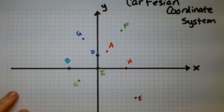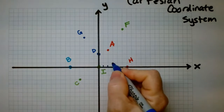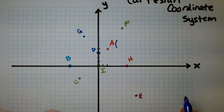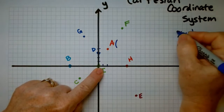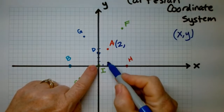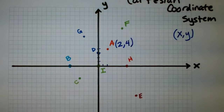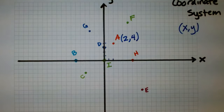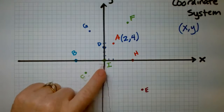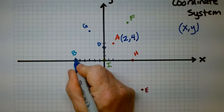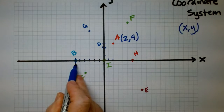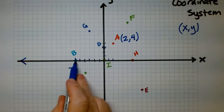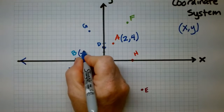Tell me the coordinates of A. We go over 2, and then how many do we go up? 1, 2, 3, 4. X is always first, so it's x comma y — that's 2 comma 4. Now for B — let's go over: 1, 2, 3, 4, 5, 6 — so we went 6 in this direction. Is that plus or minus? It's minus 6. And how much in the y? Zero. So B is minus 6 comma 0. And for point I, which is right at the origin — how much do we go in x? Zero. How much in y? Zero. The origin is always 0 comma 0.